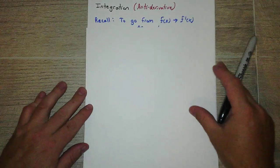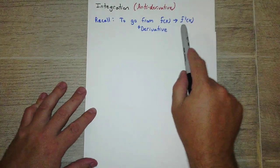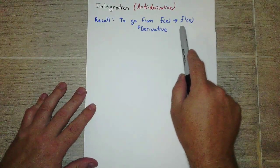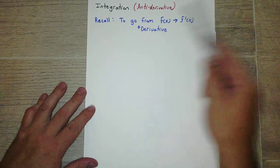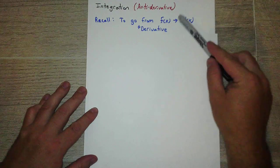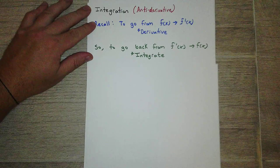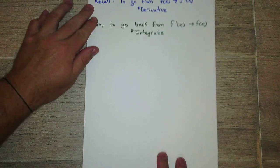Integration, Anti-Derivatives. Remember if you wanted to go, if you have a function and you wanted to find the prime or its derivative, that's what we call the derivative. So integration is basically the reverse of that. If you're given the derivative and you want to find the function. That's what integration is useful for.